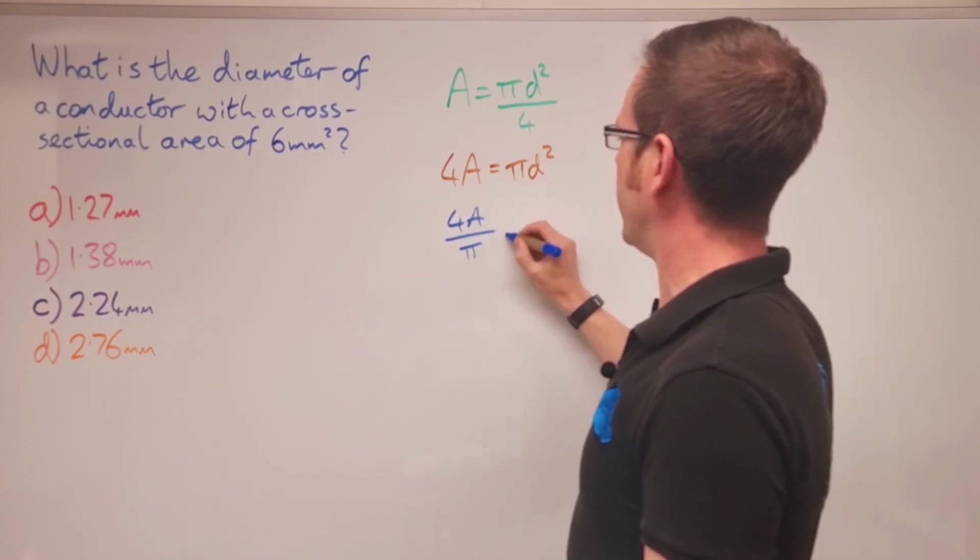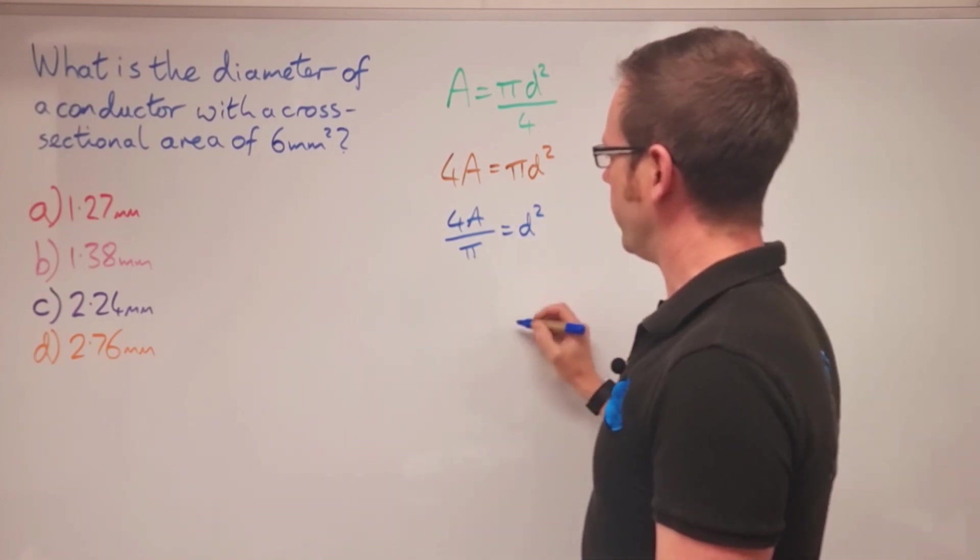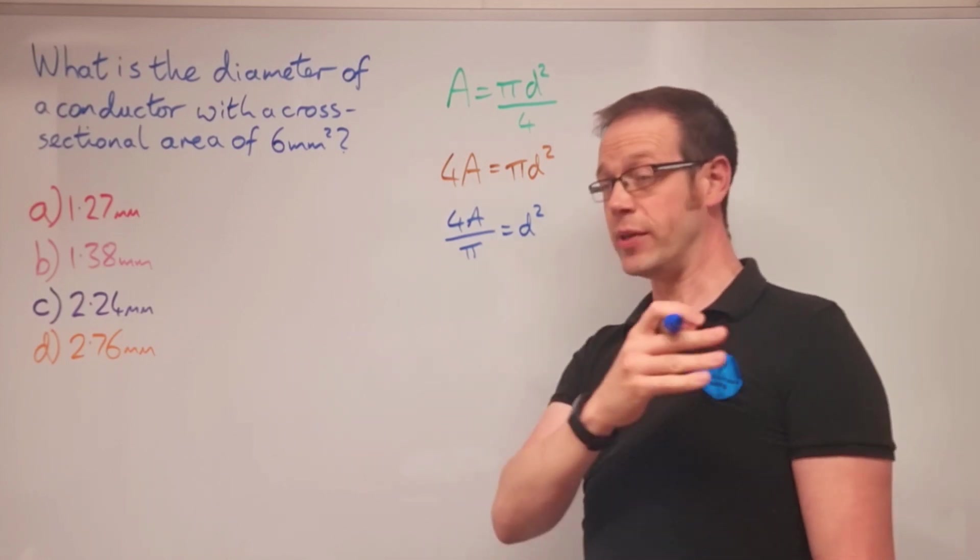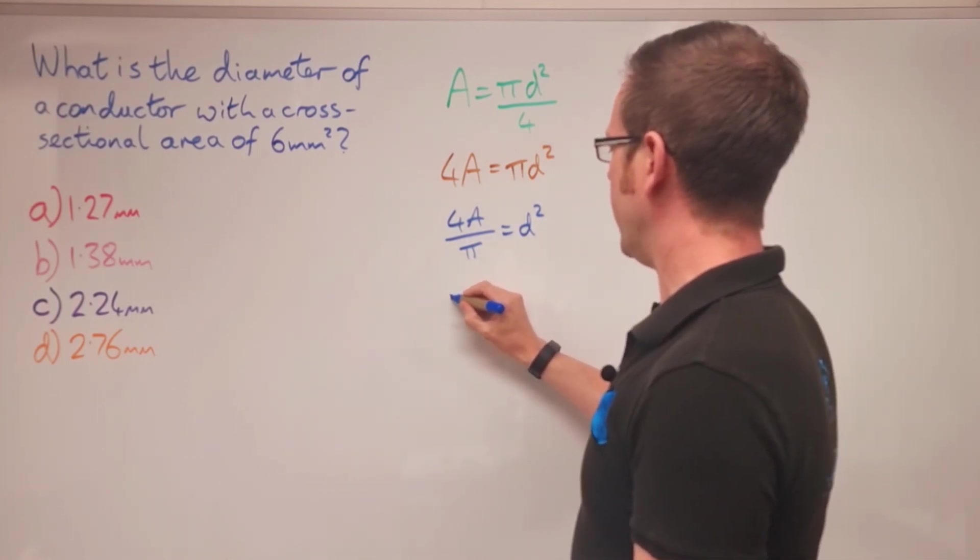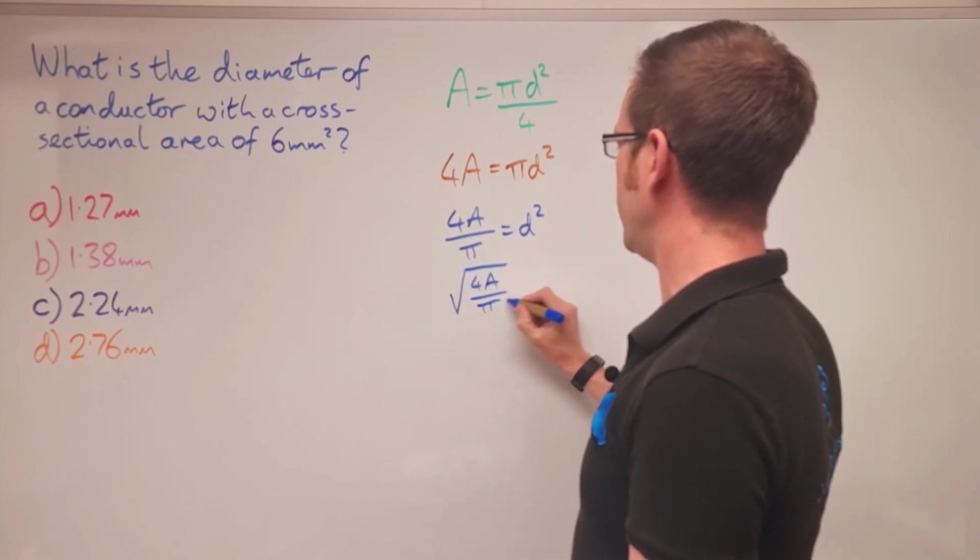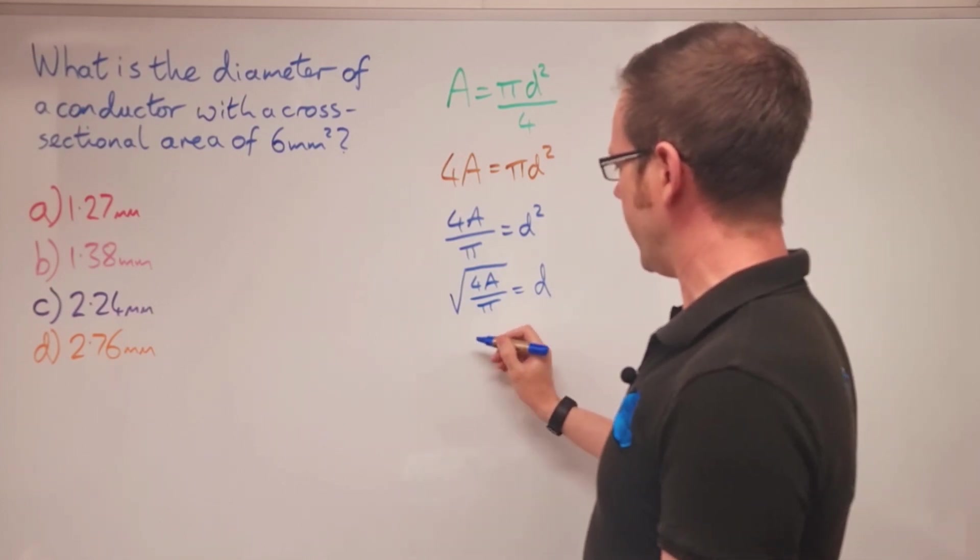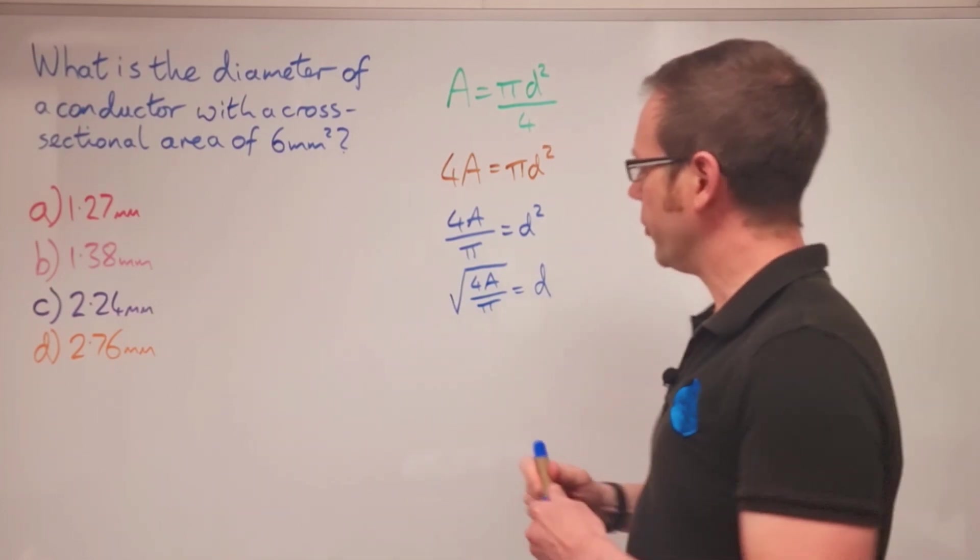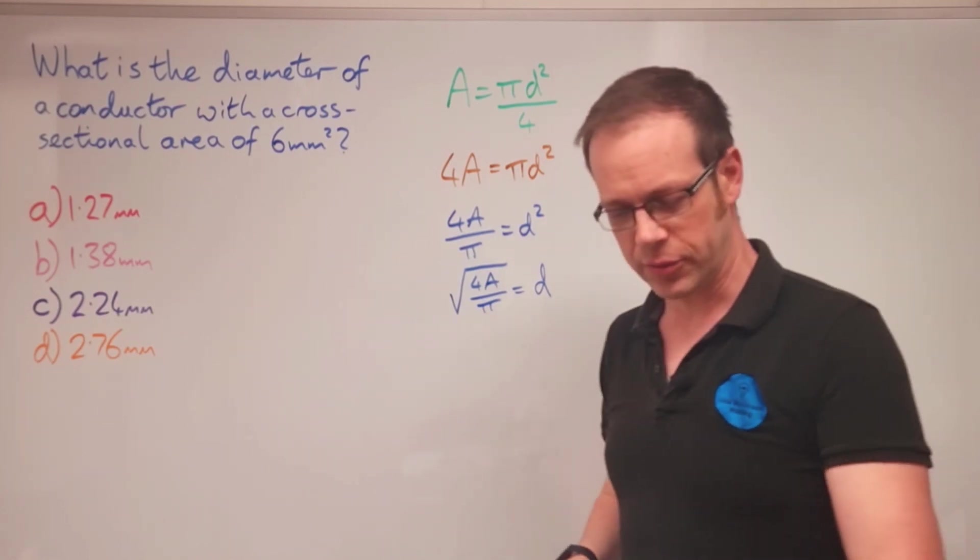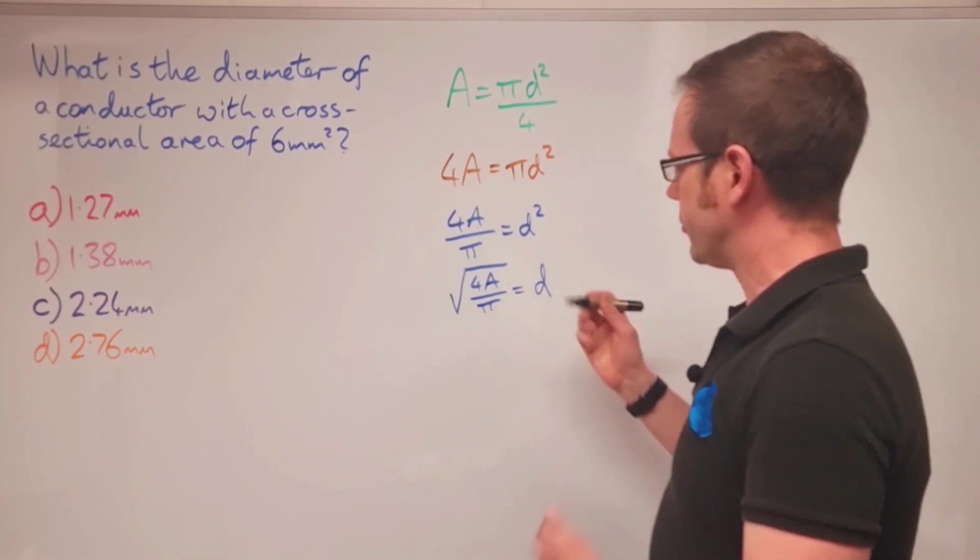If we want to get d by itself, we do the opposite of squaring, which is square rooting. We end up with the square root of 4A over pi equals d. Let me flip that around because my OCD won't let it be any other way. It's acting up now because I've used blue twice.